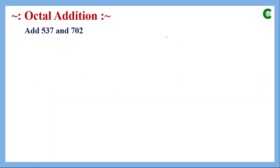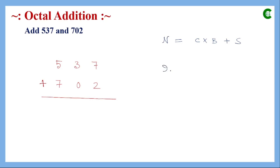For the second addition example, we start with the least significant digit: seven plus two equals nine. Using our format with base eight, nine is 1 × 8 + 1, so the sum digit is one and carry is one, forwarded to the next significant bit.